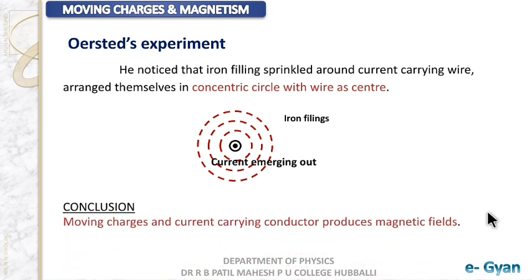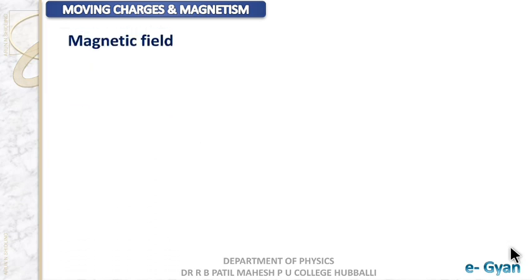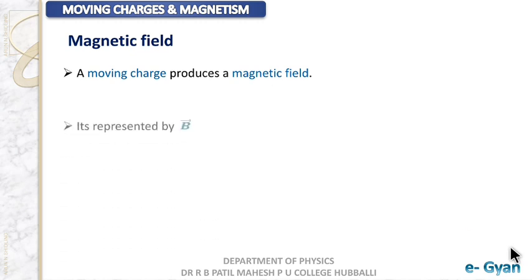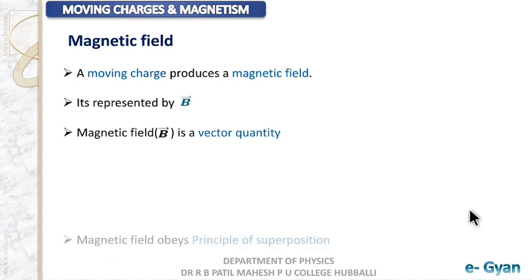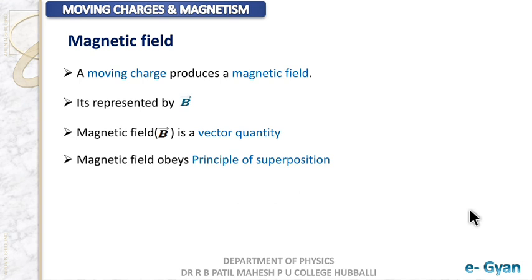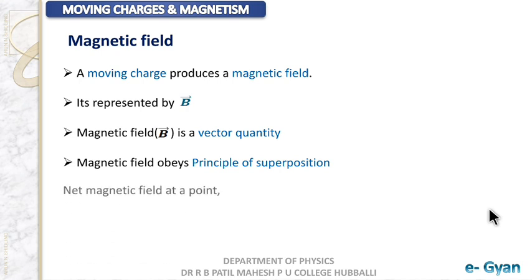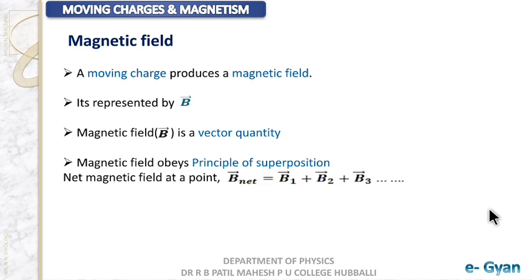The conclusion of Oersted's experiment is that moving charges and current carrying conductors produce magnetic field. The source of magnetic field is a moving charge or current. It is represented by the letter B, it is a vector quantity, and it obeys the principle of superposition — just as you have already studied for electric field. The net magnetic field at a point is the vector sum of fields due to various sources.